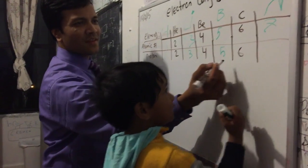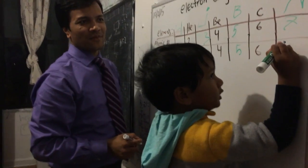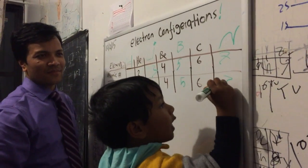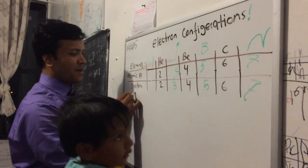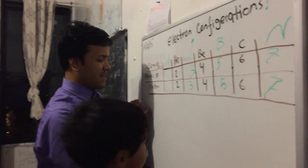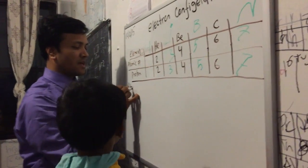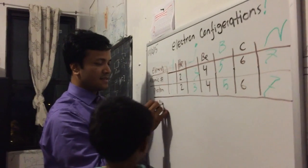Six. And how many protons in nitrogen? Seven. All right, so now we're gonna do atomic mass.